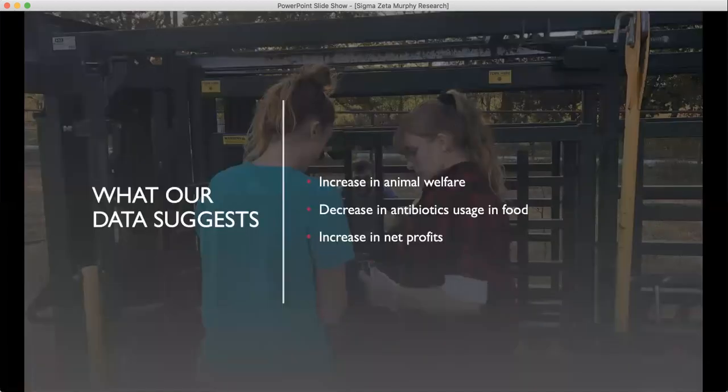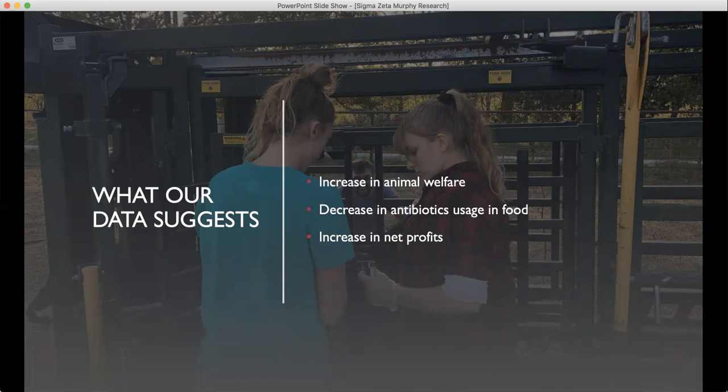Our data suggests that weaning methods that decrease the amount of stress that is experienced by calves will increase immune system functionality. And this is important because animal welfare is then increased because the calves are not experiencing as much stress. Additionally, the use of antibiotics in food would be able to be decreased as the immune system responses would increase with less stress. So if we can decrease the cost of antibiotic usage throughout the process of raising calves, then the net return to the producer would ultimately be greater.